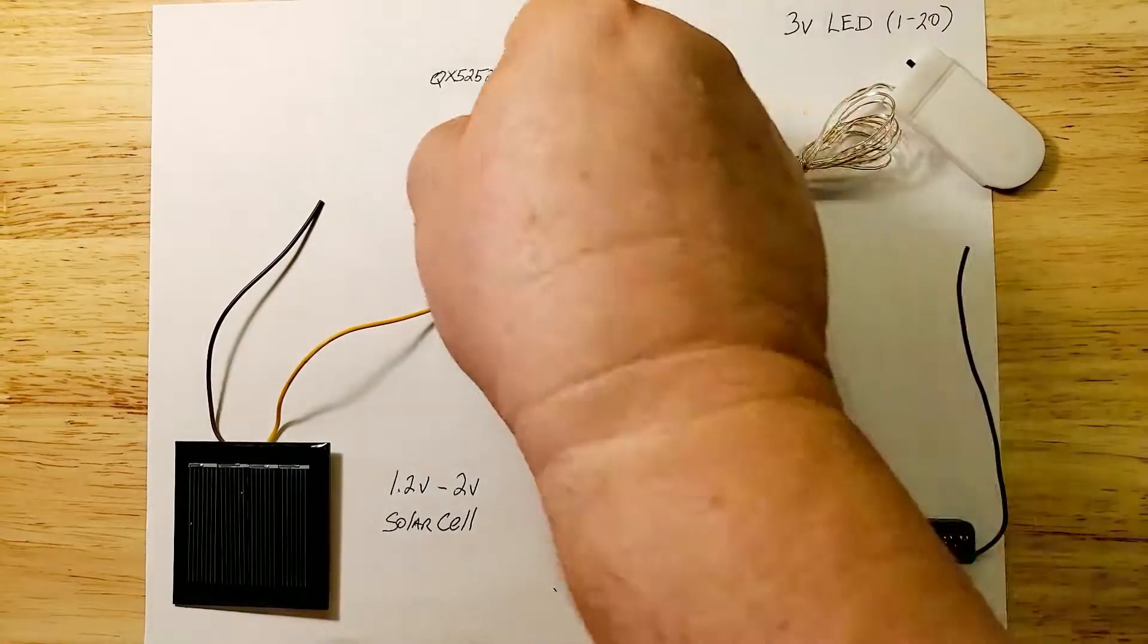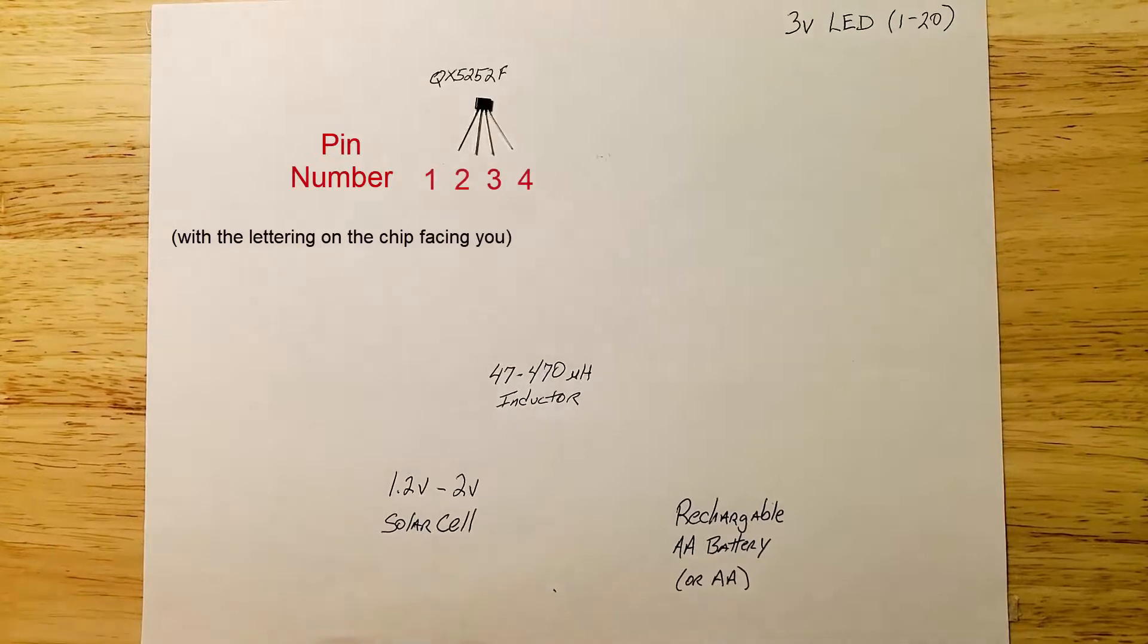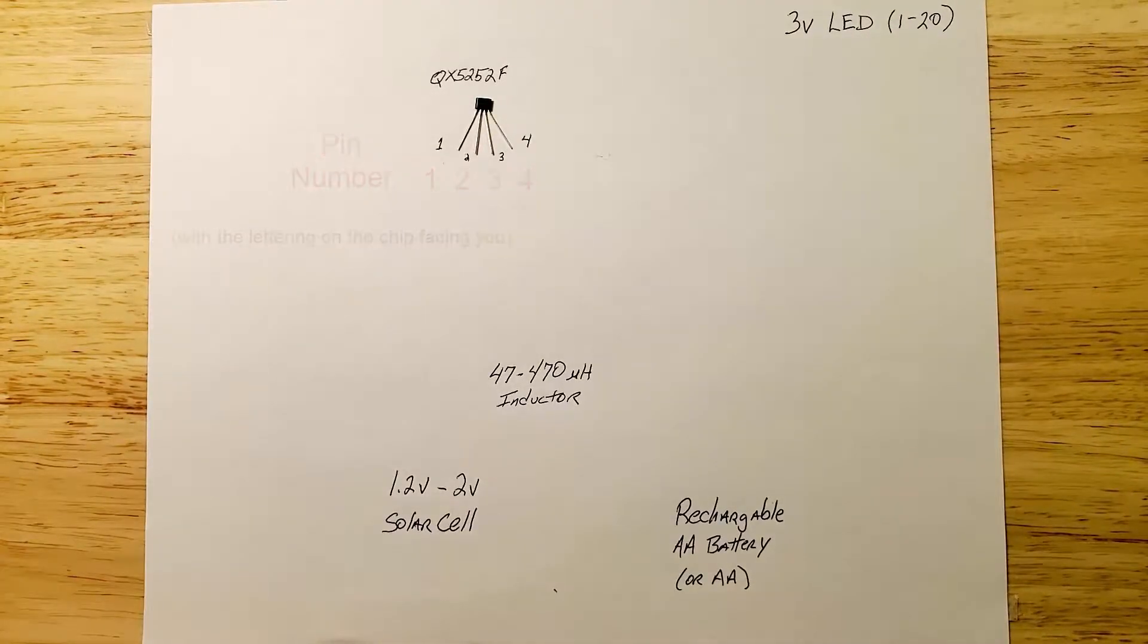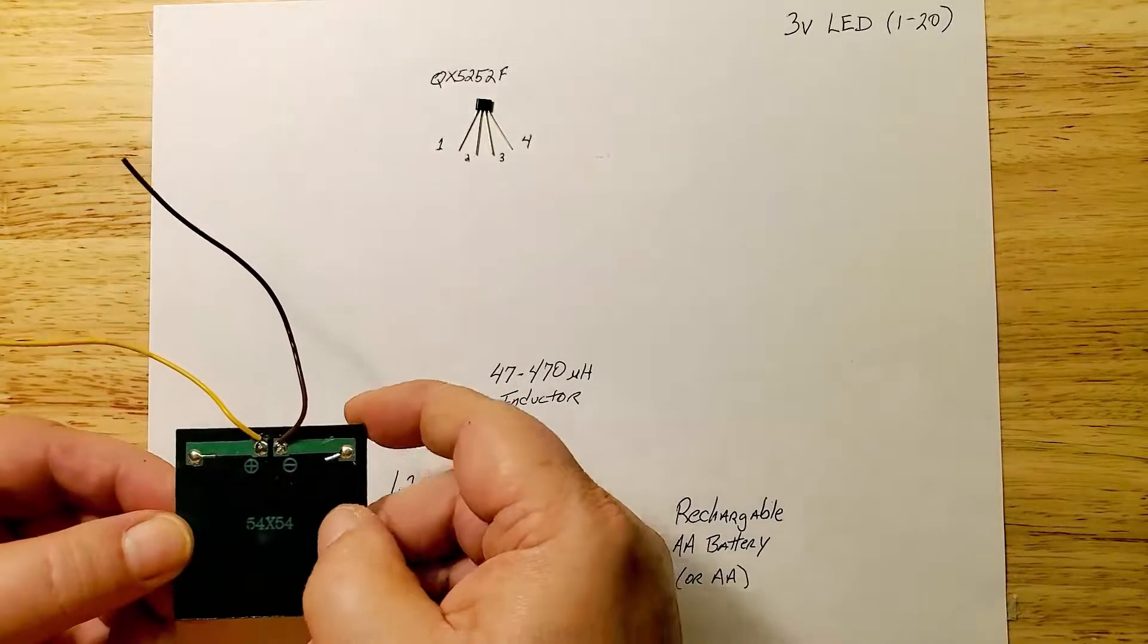Use a QX5252F chip. The chip has four legs. If you lay it down with a lettering facing you, the legs are numbered like this. Pin 1 is in the left most position and pin 4 the right most.